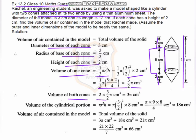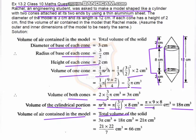The value of one cone's volume becomes 3/2 π cm³, so the volume of both cones is 2 × 3/2 π = 3π cm³. The volume of the cylindrical portion equals π r² h = π × (3/2)² × 8 = π × 9 × 8 / 4 = 18π cm³.